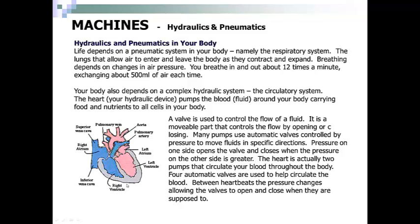A valve is used to control the flow of blood. It is a movable part that controls the flow by opening or closing. Many pumps use automatic valves controlled by pressure to move fluids in specific directions. Pressure on one side opens the valve and closes when the pressure on the other side is greater. The heart is actually two pumps that circulate your blood throughout the body. Four automatic valves are used to help circulate the blood. Between heartbeats, the pressure changes, allowing the valves to open and close when they are supposed to.